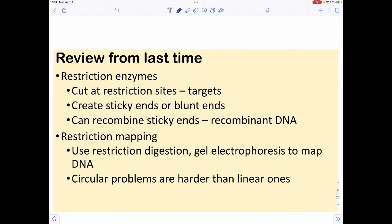Last time we dealt with how we can modify genes, and one of the easiest ways to do that is by using restriction enzymes, or restriction endonucleases — REs. These cut at what we call restriction sites, which are unique targets. For example, EcoRI cuts at G-A-A-T-T-C between that G and the A, creating what we call a sticky end, where you can recombine or stick these sticky ends together.